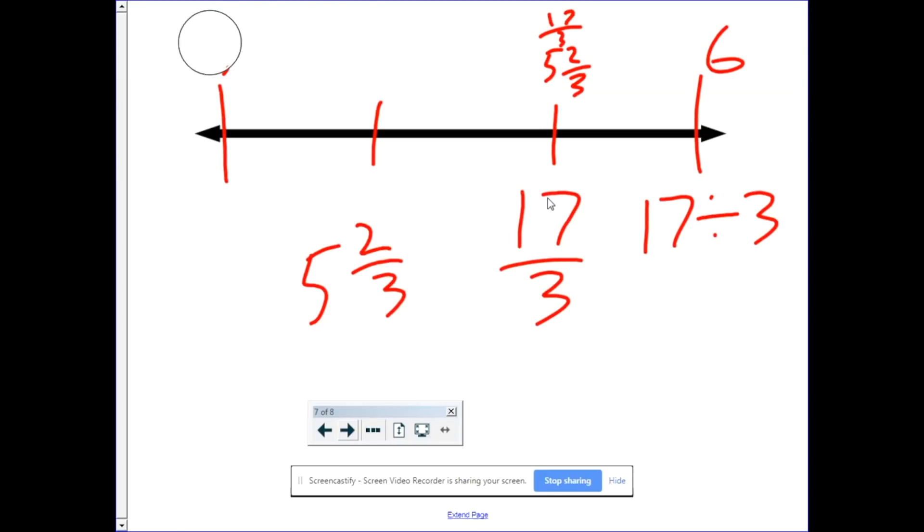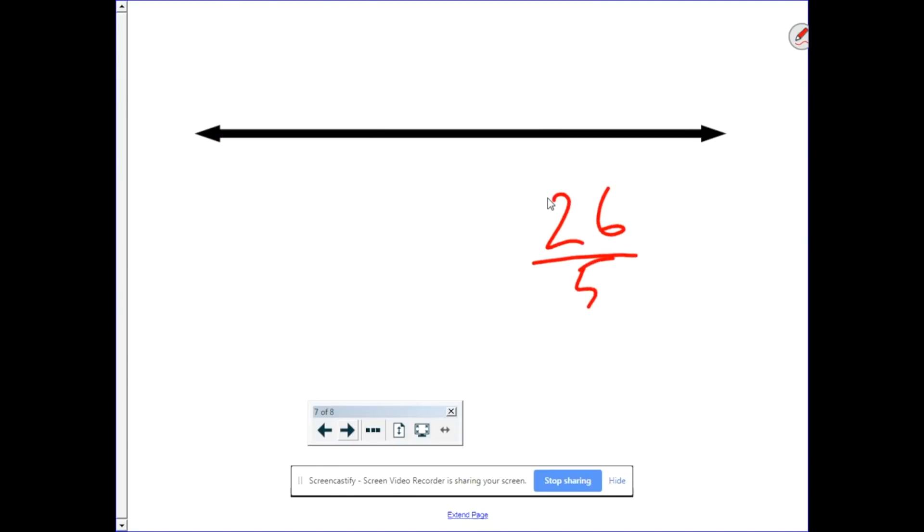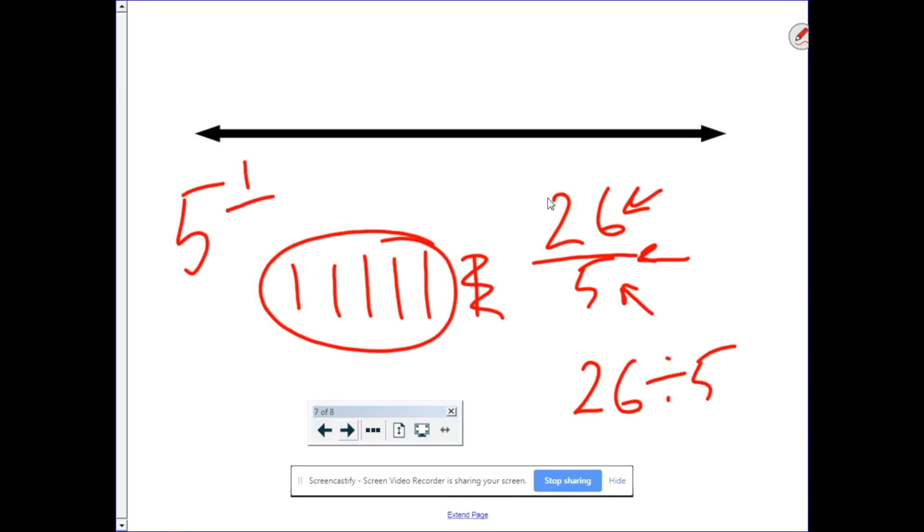Let's do one last example. Twenty-six-fifths. Well, fractions are division. So, 26 divided by five. Five goes into 26. Let's count. Five, 10, 15, 20, 25. And then it would be 30, but that's too big. So, it goes into it five times, with one left over. So, five and one-fifth.